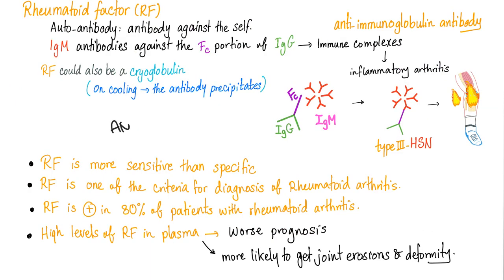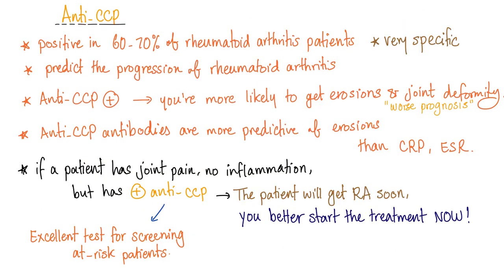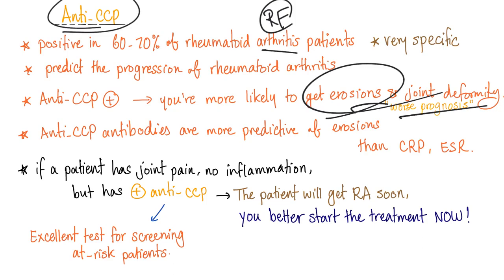If anti-nuclear antibodies were antibodies against the nucleus, and anti-neutrophilic cytoplasmic antibodies were antibodies against the cytoplasm, rheumatoid factors are antibodies against antibodies — crazy. More sensitive for rheumatoid arthritis, less specific, and it does correlate. How about anti-CCP? If rheumatoid factor was sensitive, anti-CCPs are specific — they are specific for rheumatoid arthritis, not sensitive but very specific, and they do correlate with disease activity.